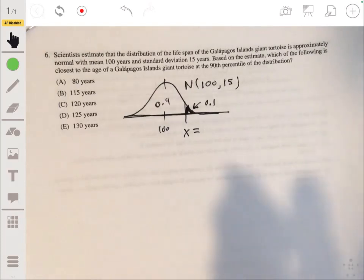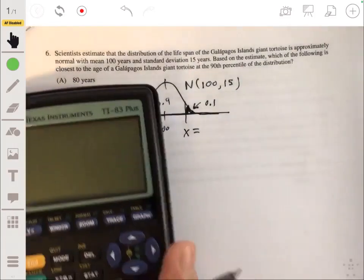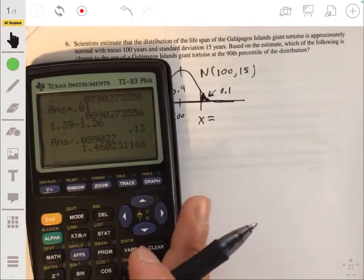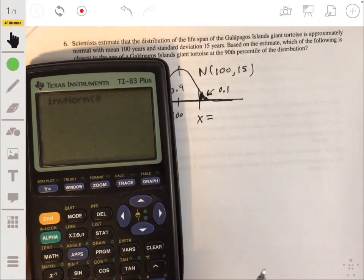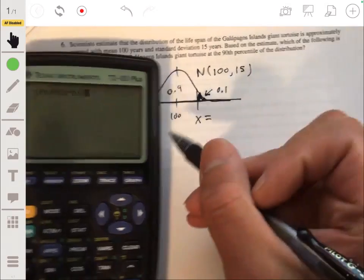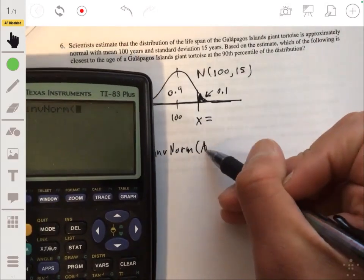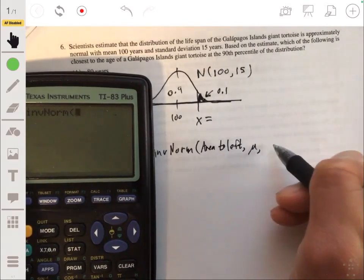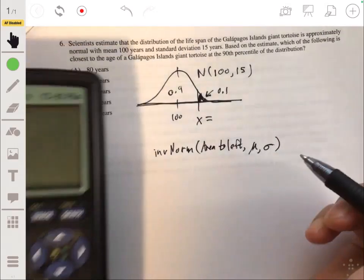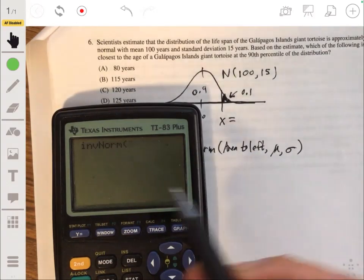So for this, you can use your table A and find the z-score that corresponds to this area. But in your calculator, you have this function called inverse norm. You go distribution, inverse norm. And the way you work with this is that you enter the area to the left followed by the mean and the standard deviation of distribution. That's the syntax in this calculator. If you have a newer one it'll actually be easier to use, probably just have a list. But the syntax is area to the left.